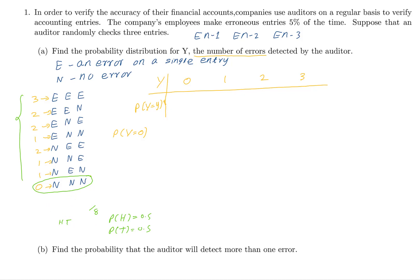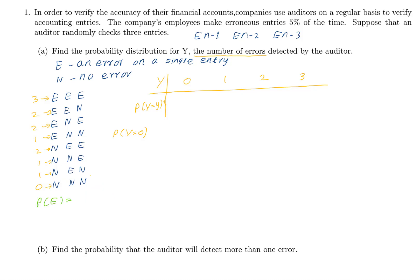But the difference from the coin toss experiment is that here the probabilities are not the same. We are not at 50%. Probability of E equals 0.05 and probability of N equals 1 minus 0.05, which is 0.95. These probabilities are not equal, so we cannot use the counting method here.